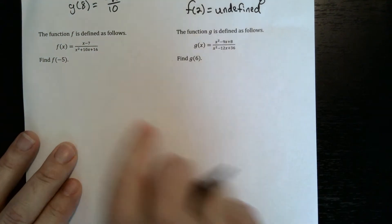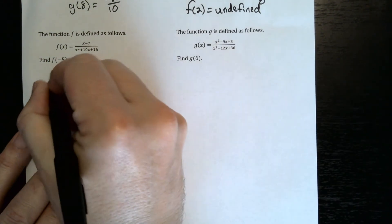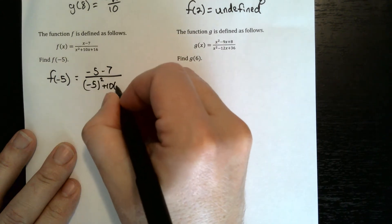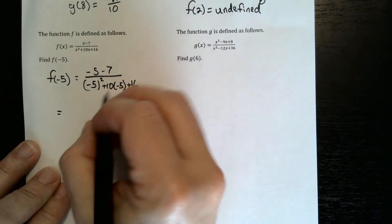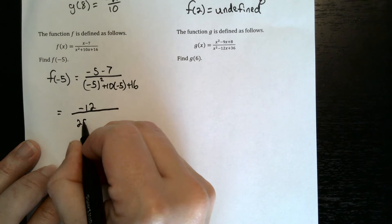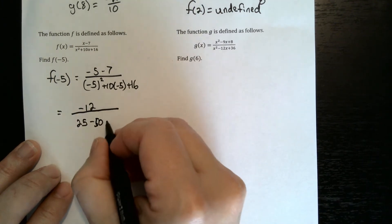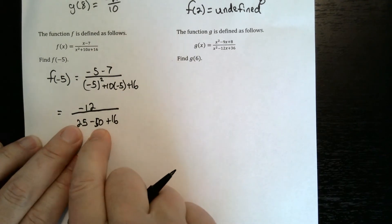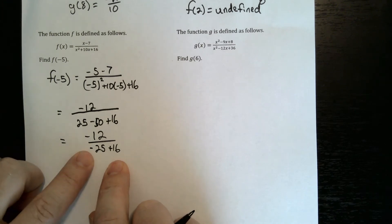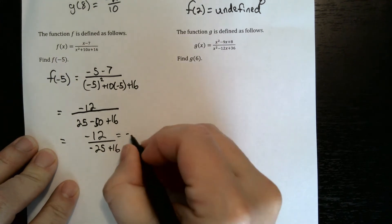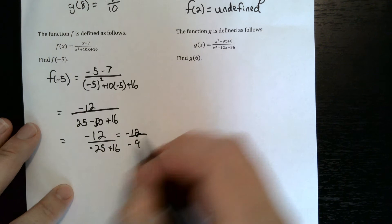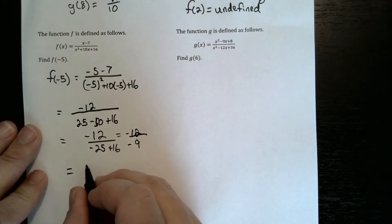For f of negative 5, we plug into x minus 7 over x squared plus 10x plus 16. That gives negative 5 minus 7 over negative 5 squared plus 10 times negative 5 plus 16. The top is negative 12. The bottom: negative 5 squared is positive 25, minus 50 plus 16 gives us 25 minus 50 plus 16 equals negative 9. So we have negative 12 over negative 9, and reducing by dividing top and bottom by 3 gives 4 over 3.